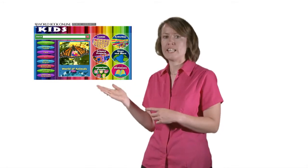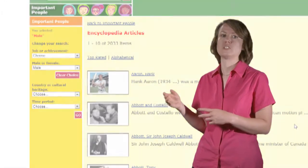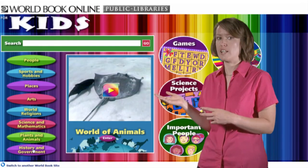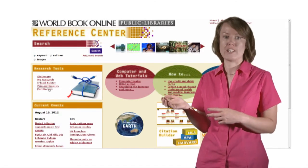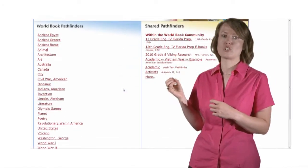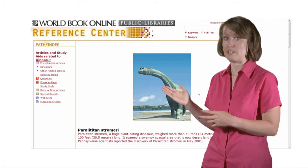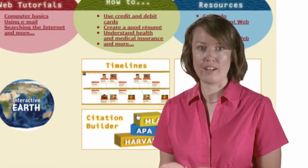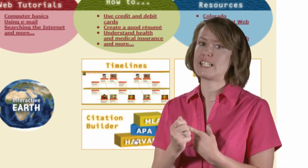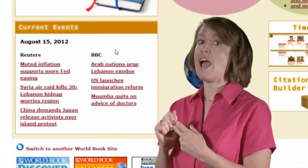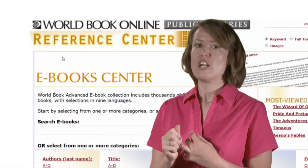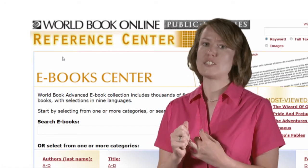In World Book Online Kids, Info Finder, and Discover, you can also browse various subjects, people, science projects, the dictionary, and many other sources depending on the site. Back on World Book Online Reference Center, you can use the Pathfinder's link to search collections of resources on various topics. The World Book Online Reference Center has several other useful resources as well, including timeline and citation builders, interactive maps, and links to information about current events. And remember to click on the e-books center to browse for free downloads of classic works.